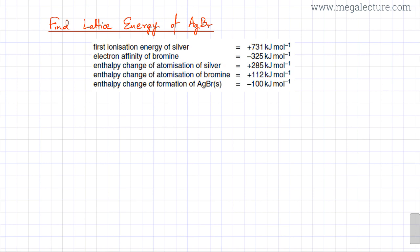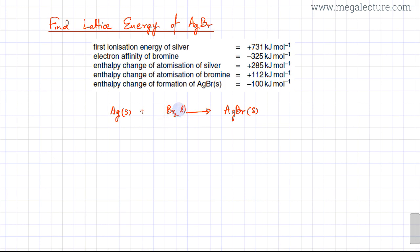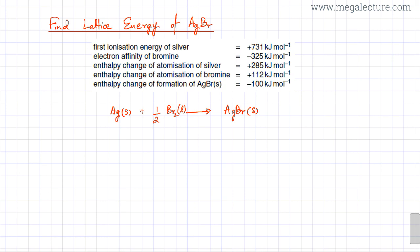Let's start with the enthalpy change of formation of AgBr, which is when one mole of AgBr as an ionic solid is formed from its constituent elements in their standard states — silver as a solid and bromine as a liquid, using half BR2 because there is only one bromine in the product. The enthalpy of formation requires one mole of product, so bromine's coefficient is half.